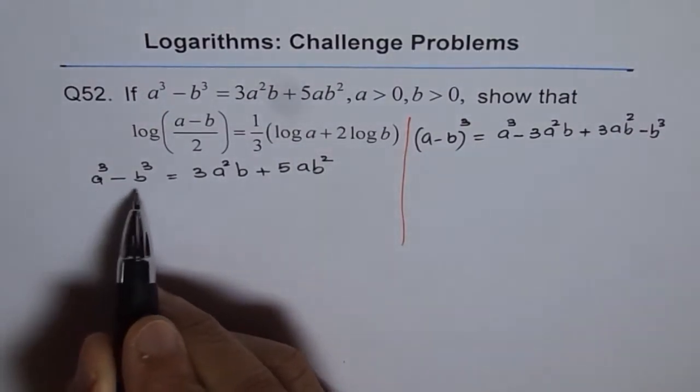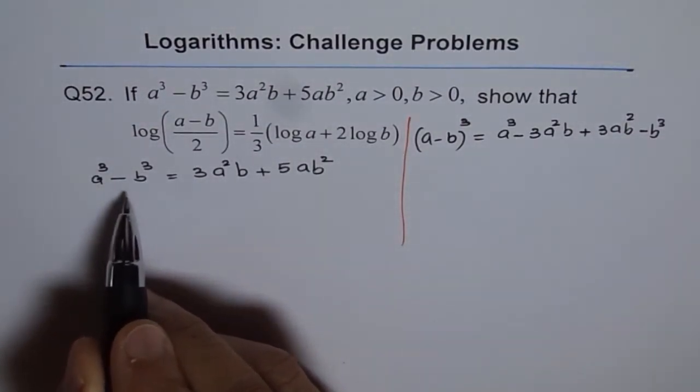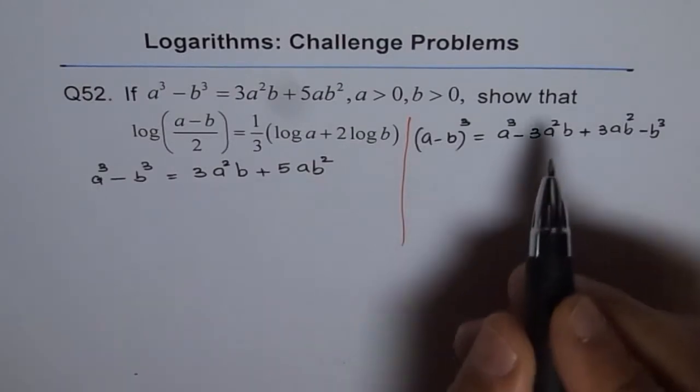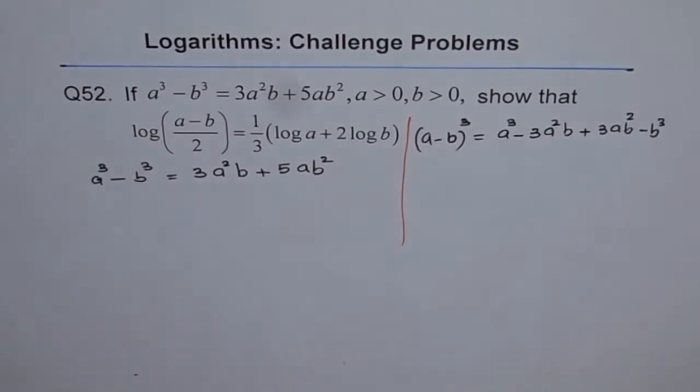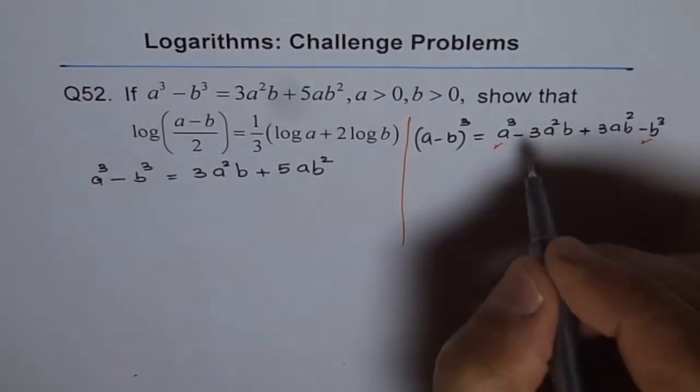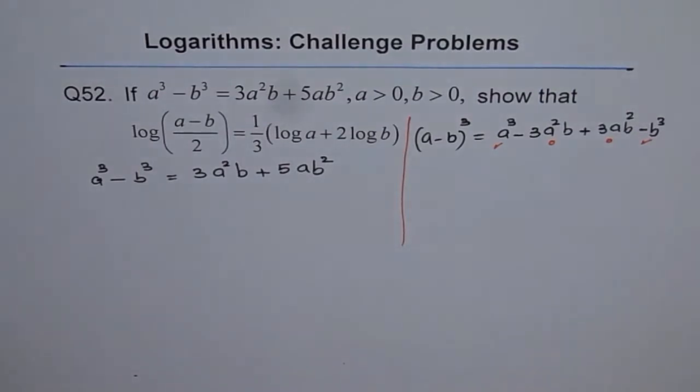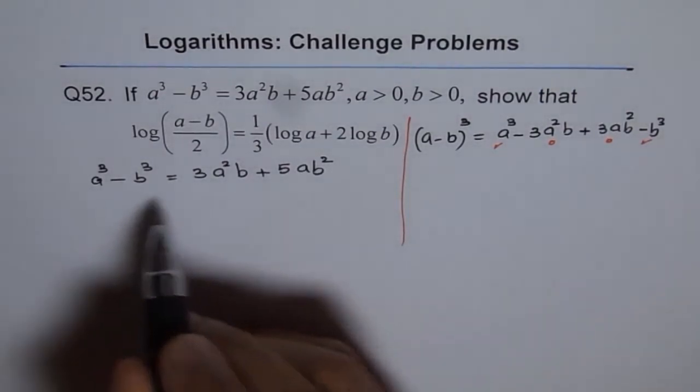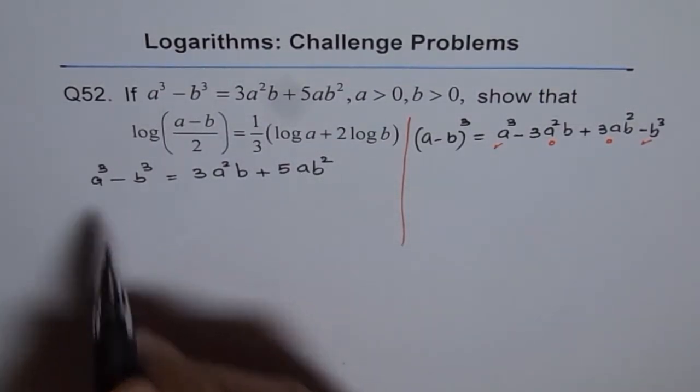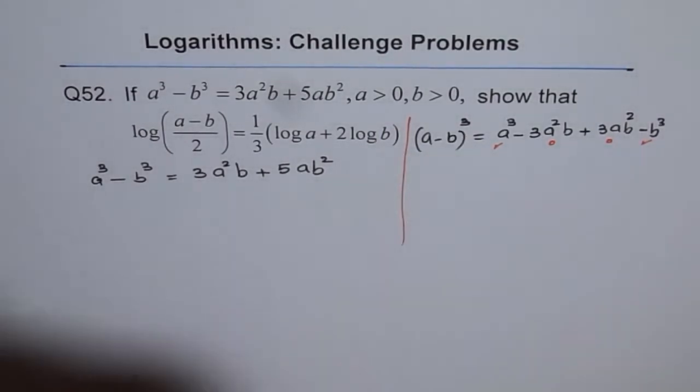Now, if I have to make this cube, then what I need is to add these two terms. I already have a cube minus b cube, but I don't have these two terms. So, if I add these two terms on both sides, I can make left side as a minus b whole cube.